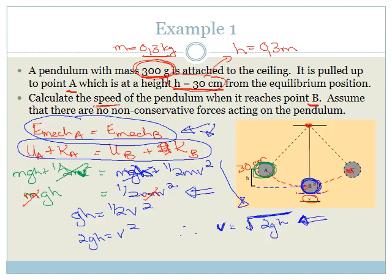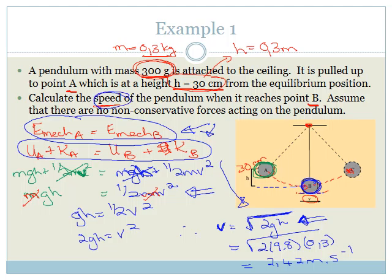Now they actually want us to work out the speed, so we fill in the numbers. It's square root of 2 times 9.8 times the height of 0.3 meters. We calculate: square root of 2 × 9.8 × 0.3, which equals 2.42 meters per second. Luckily they asked for the speed, which is a scalar, so no direction is required.